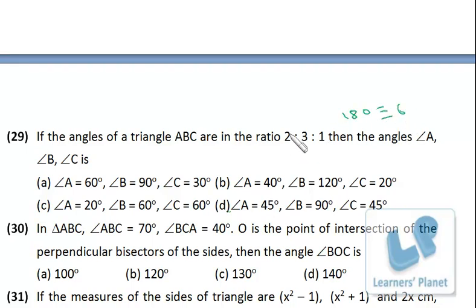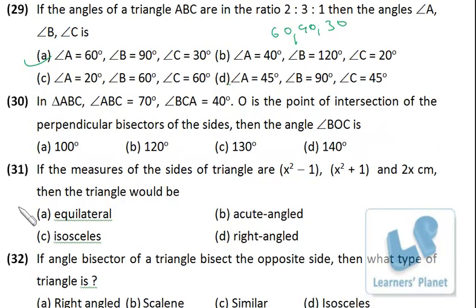So 2 is 60, 90 and 30. So A, B, C: 60, 90, 30. Pretty simple. Can be done in 20 seconds.